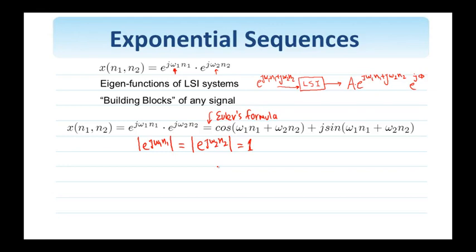The first property we want to examine is the periodicity of these complex exponentials with respect to the frequency omega 1 and omega 2. As it's straightforward to see, these complex exponentials are periodic with respect to frequency with period 2 pi in both directions — 2 pi in the omega 1 direction and 2 pi in the omega 2 direction.